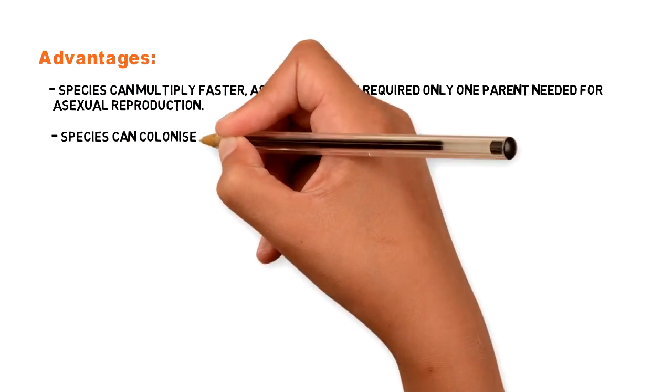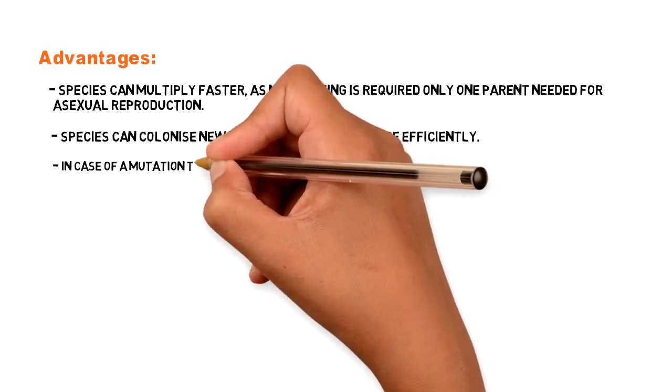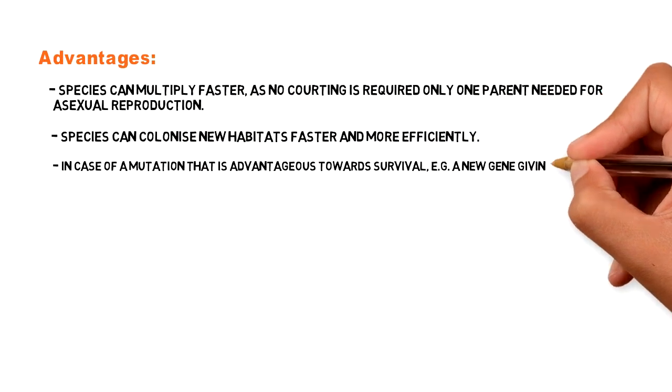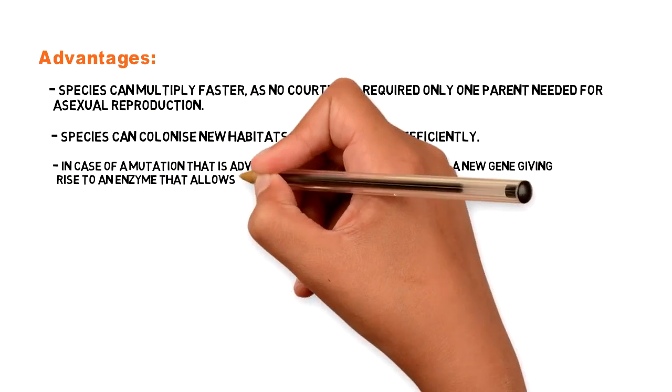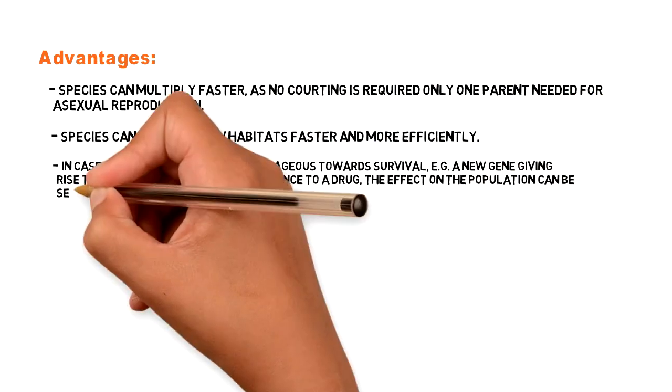Species can colonise new habitats faster and more efficiently. In case of a mutation that is advantageous towards survival, for example a new gene giving rise to an enzyme that allows resistance to a drug, the effect on the population can be seen without much delay.